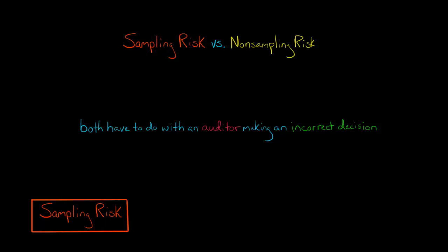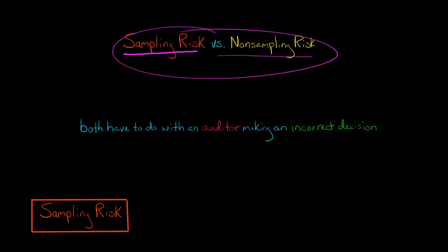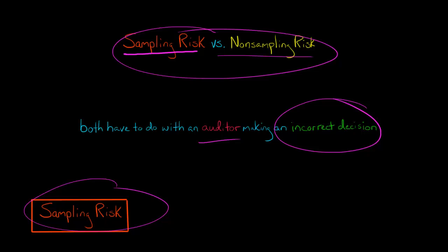In this video, we're going to discuss the difference between sampling risk and non-sampling risk. Both of these have to do with the auditor making an incorrect decision, but sampling risk has to do with the sample not being representative of the population from which it's drawn.